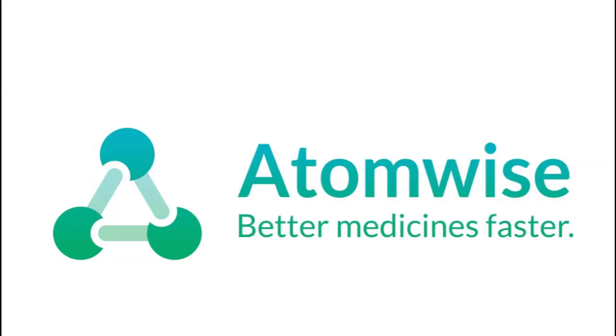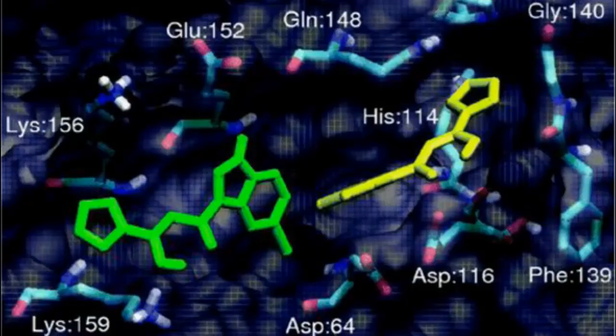Atomwise is using AI and deep learning to facilitate drug discovery. Using technology based on convolutional neural networks, Atomwise's algorithms can extract insights from millions of experimental affinity measures and thousands of protein structures to predict the binding of small molecules to proteins. The company's AI has improved hit rates by 10,000x and screens 10 to 20 million compounds a day, while identifying characteristics of patients for clinical trials.